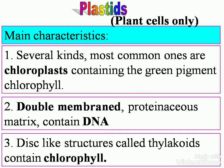Plastids. While centrosomes are present in animal cells only, plastids are present in plant cells only. Main characteristics: there are several kinds. The most common ones are chloroplasts, containing the green pigment chlorophyll. They have a double membrane. Their proteinaceous matrix contains DNA — deoxyribonucleic acid. Disc-like structures called thylakoids contain chlorophyll.